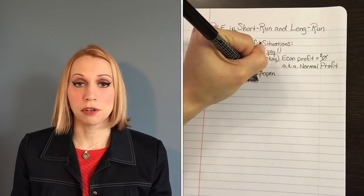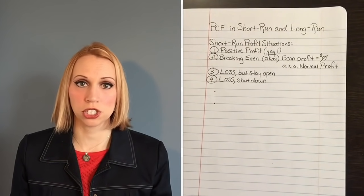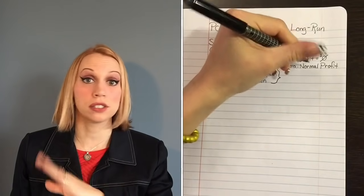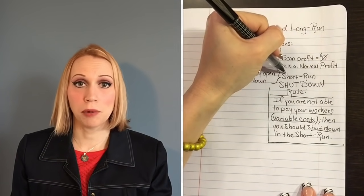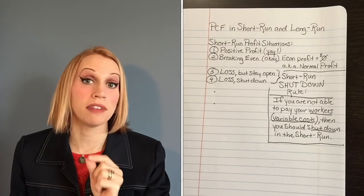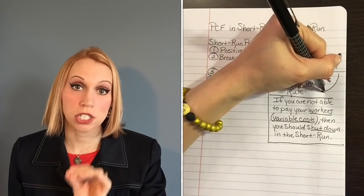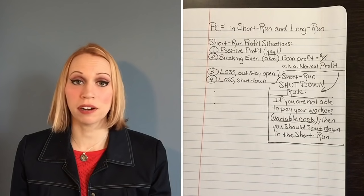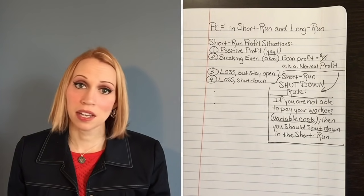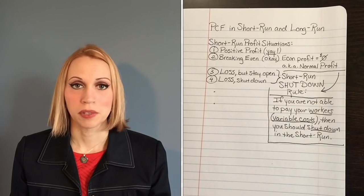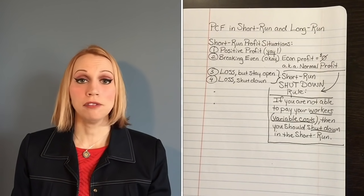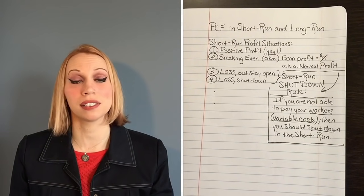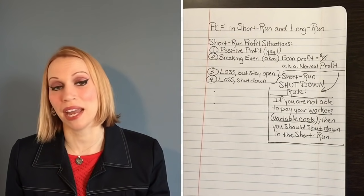How do you know if you're making a loss whether you should stay open or shut down? Here is your short run shutdown rule, which is universal for all firms: if you're not bringing in enough money to pay your workers — your variable costs — then you should shut down in the short run. If you can cover your variable costs, stay open. If you can't cover your variable costs, shut down. After this lesson you'll be able to look at a graph and instantly know which of these four situations a business is in based on the location of their demand curve.